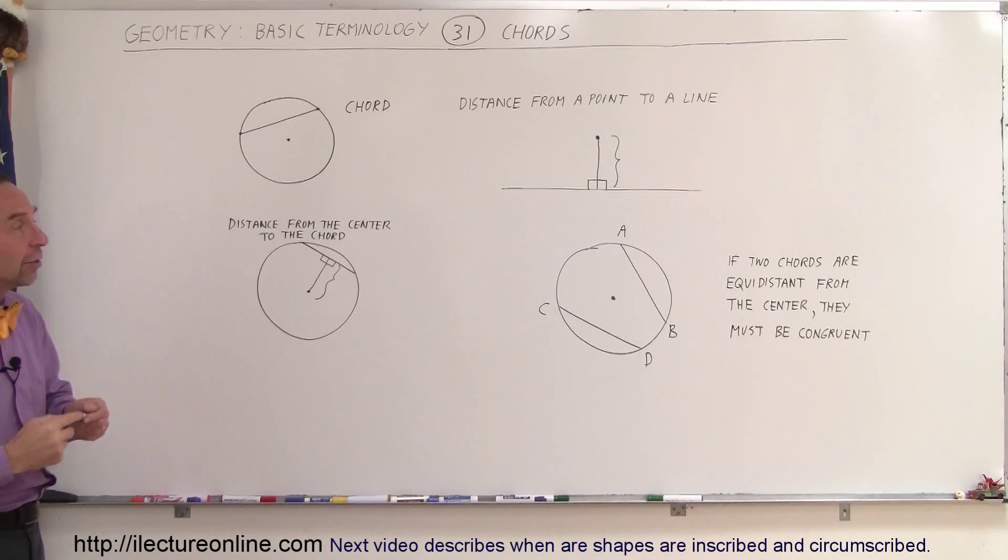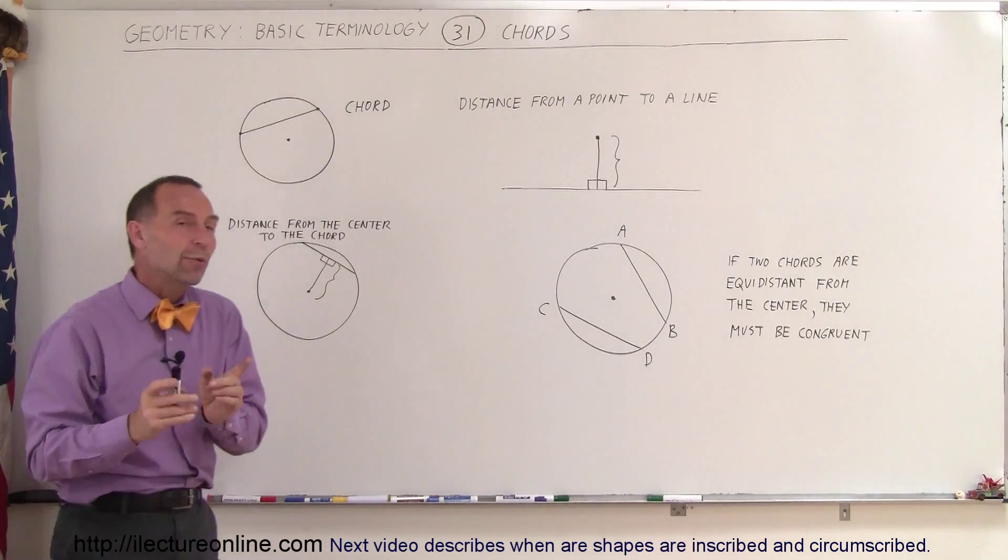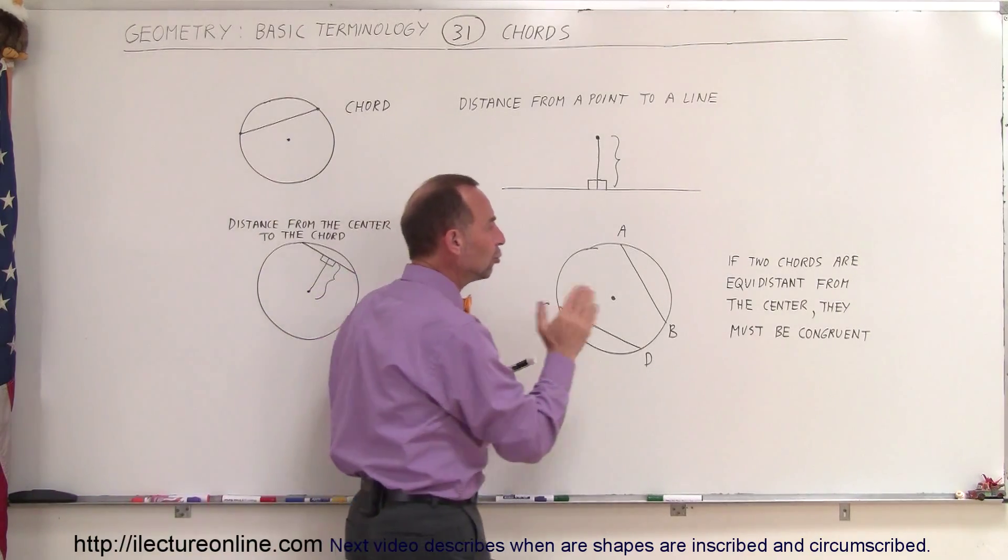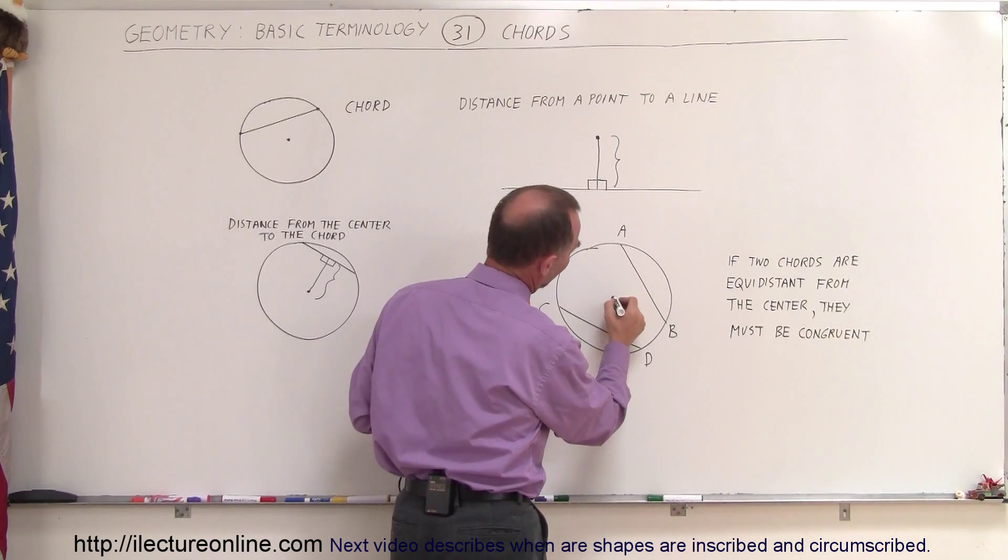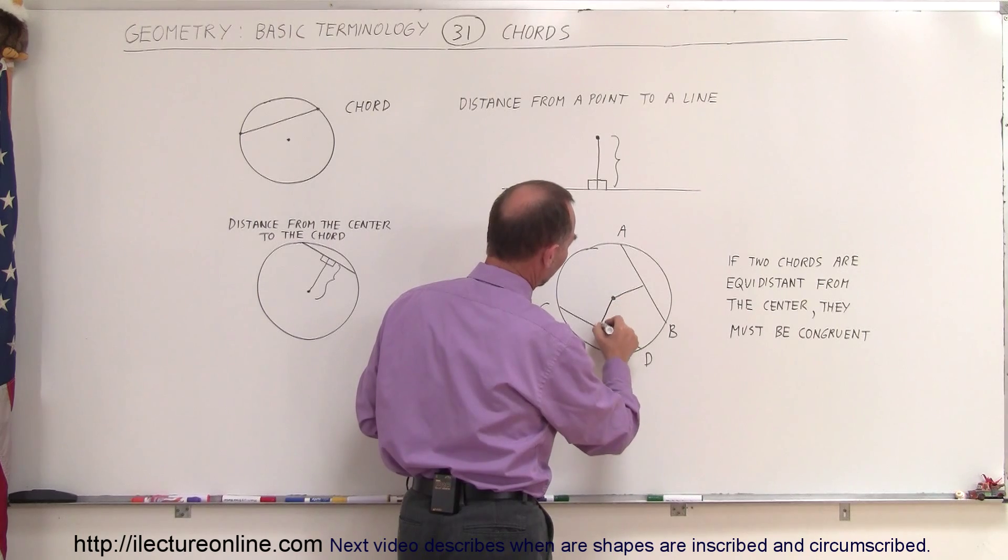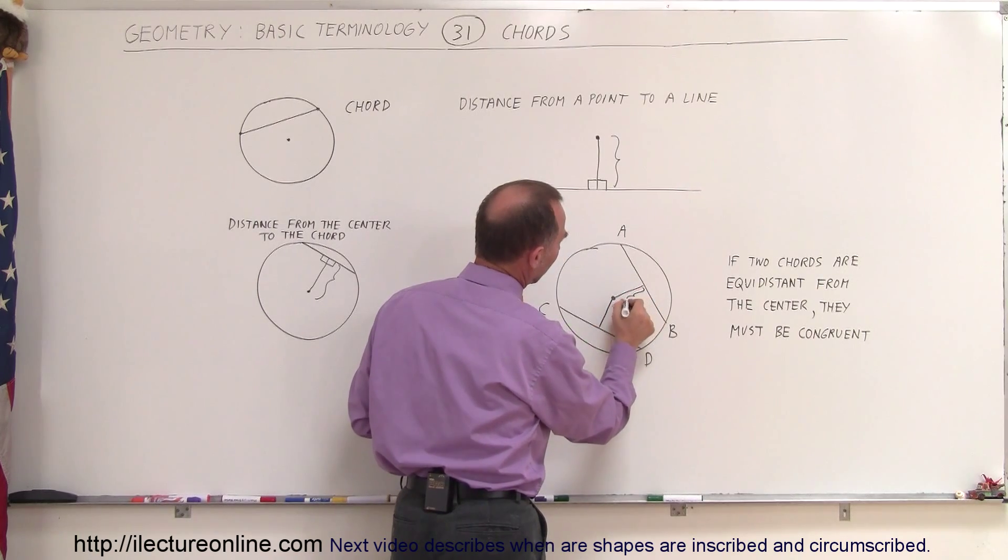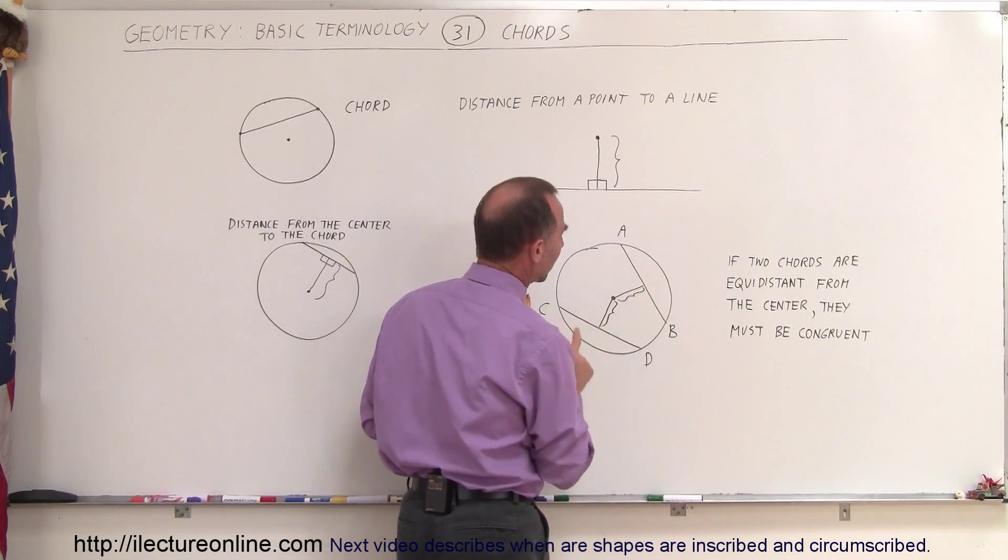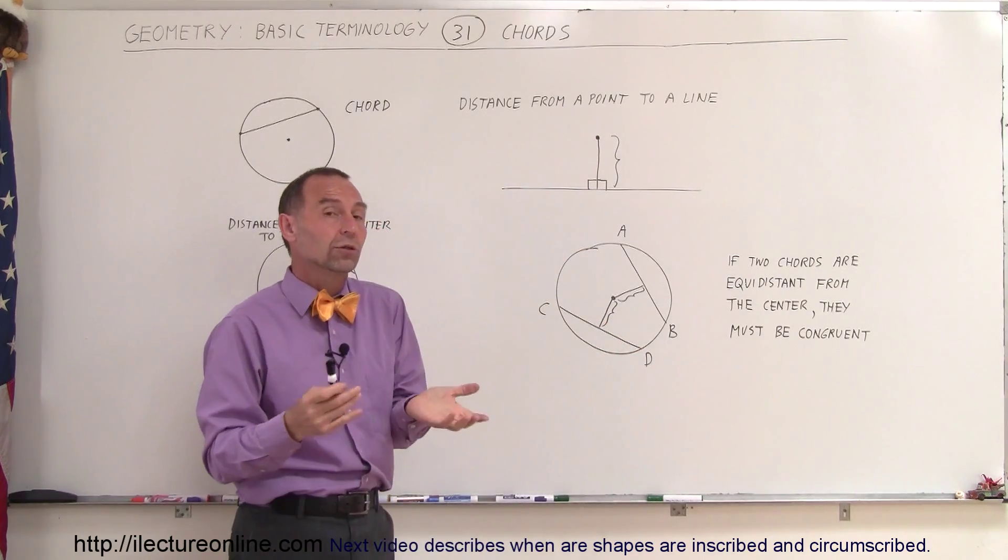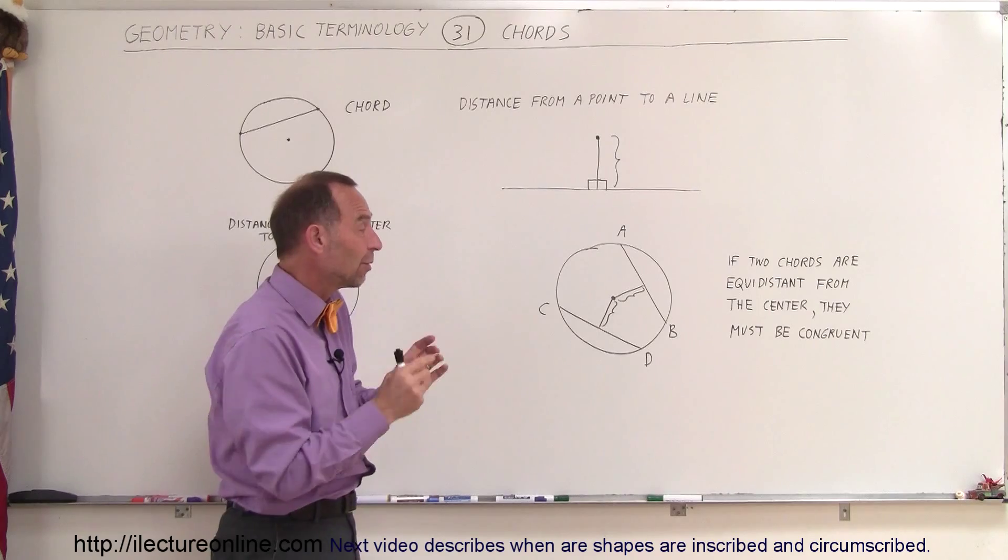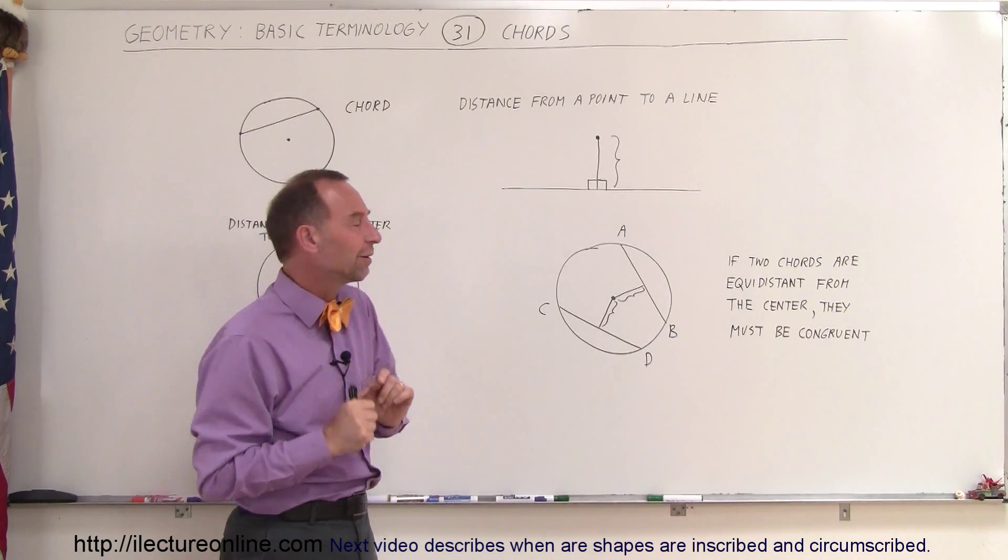Now, that is a useful thing to know because if, for example, we have two chords and the two chords are equidistant from the center, in other words, if I draw a line from the center to this chord and I draw a line from the center to this chord and this distance right here is equal to this distance right here, we can then conclude that those two chords must be congruent. Well, congruent means that they must be the same length, and that's a good theory to know.